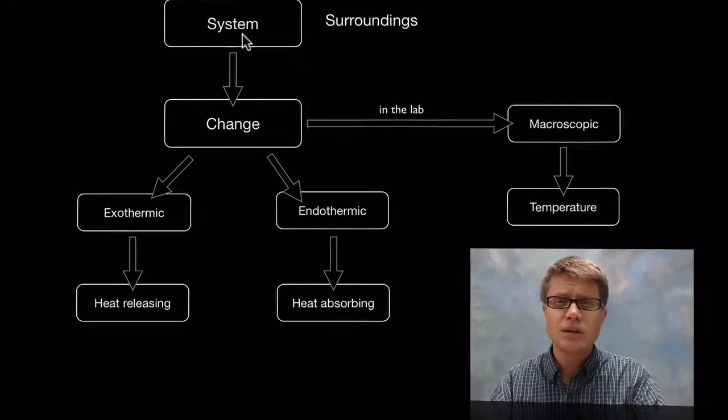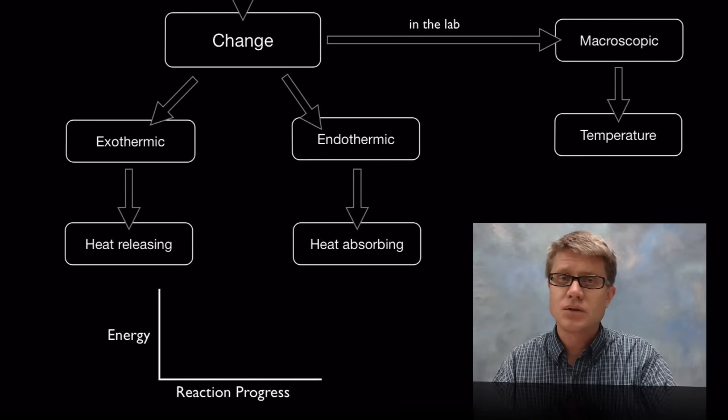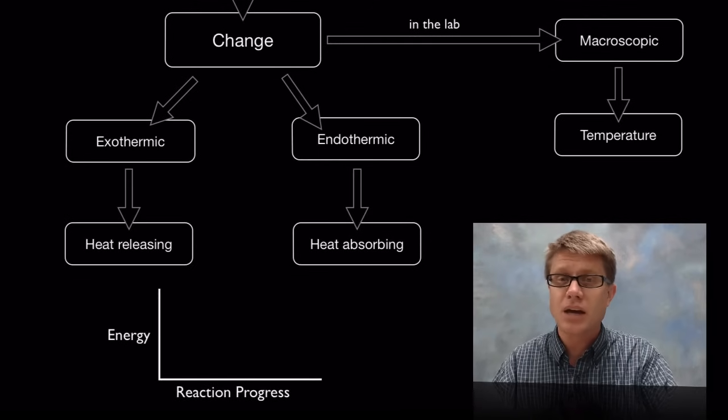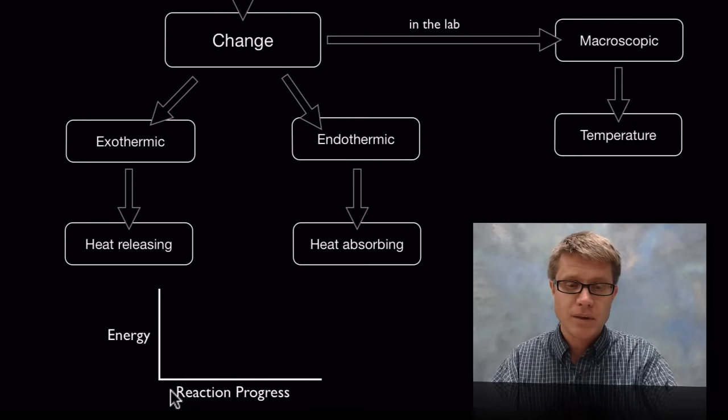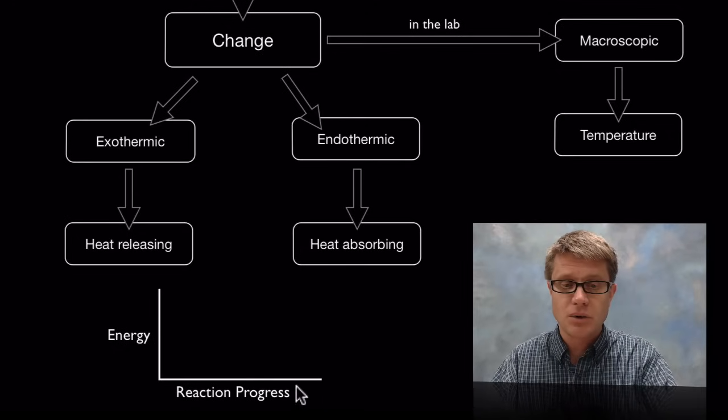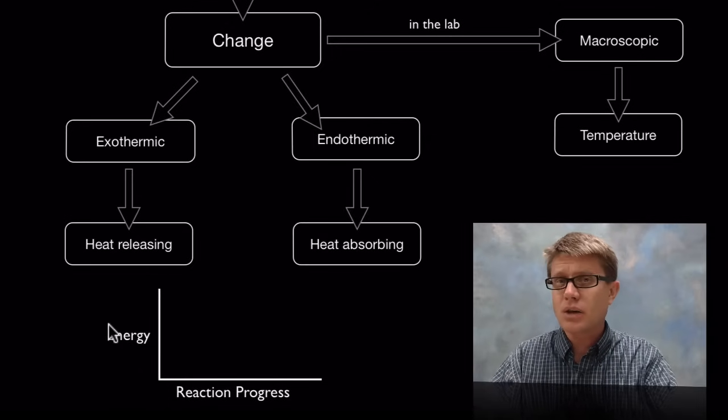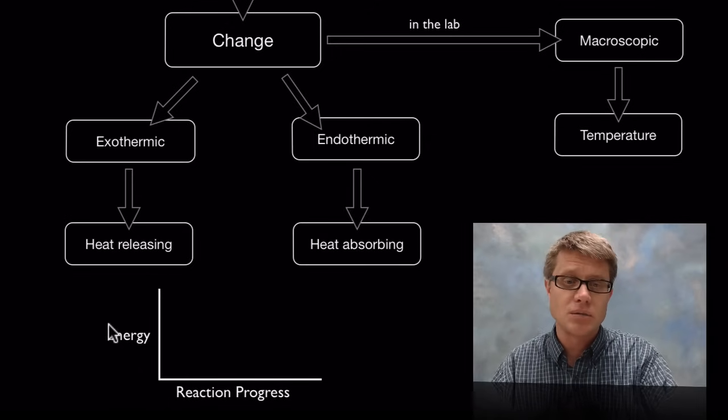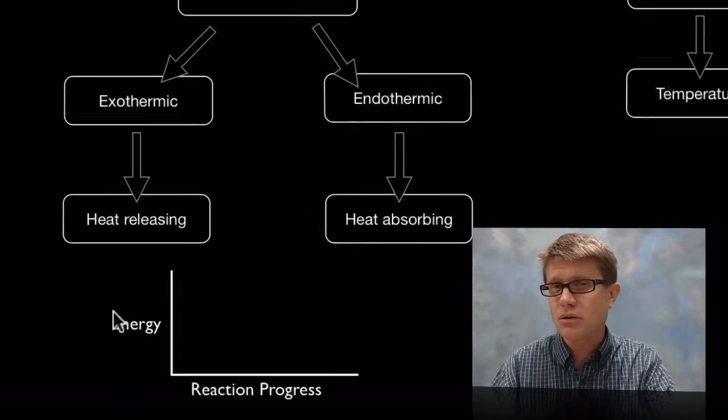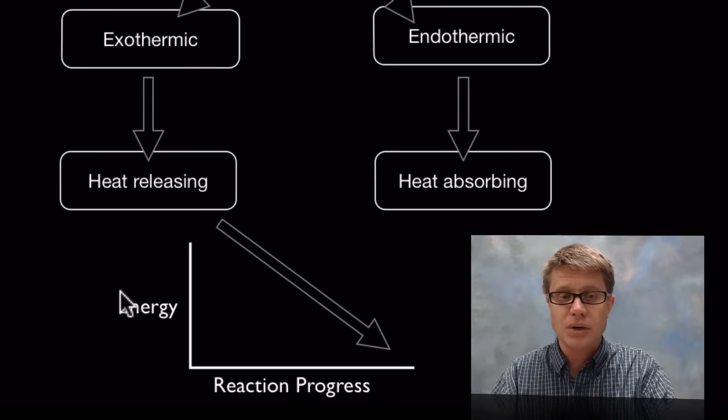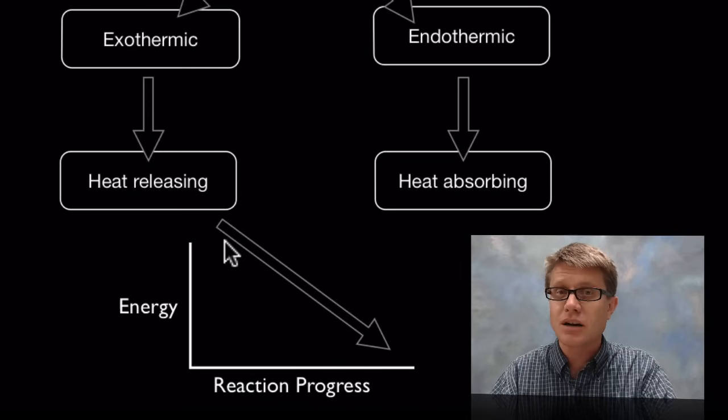Now a really neat way to observe this is to use a model, to use an energy diagram like this. And so the way it works is that the energy progress will be going along the x axis. And then the amount of energy in the reactants and products is going to be displayed. And so in an exothermic reaction what you'll see is a downhill reaction. In other words the reactants are going to have more energy than the products.